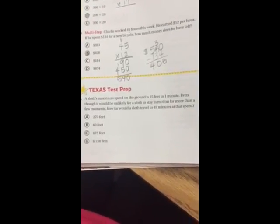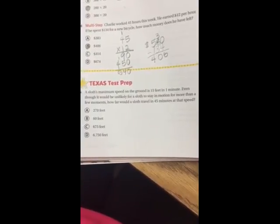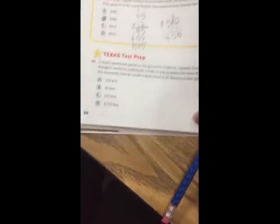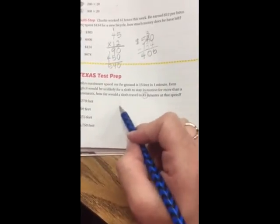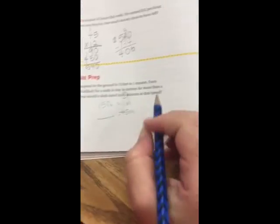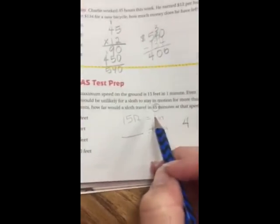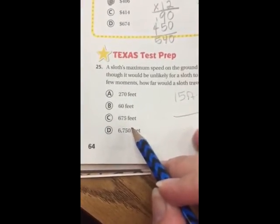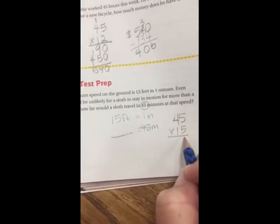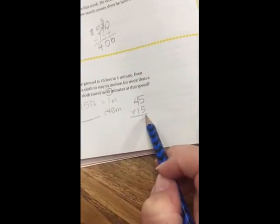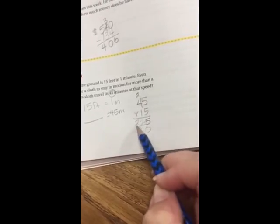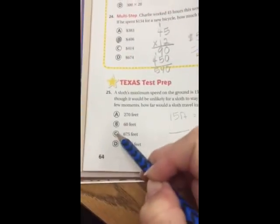Number 25. His sloths' maximum speed on the ground is 15 feet in one minute. Even though it would be unlikely for a sloth to stay in motion for more than a few moments, how far would a sloth travel in 45 minutes at that speed? The question is, how far will he travel in 45 minutes? Well, I know 15 feet is one minute. So, 45 minutes, I've got to figure out. So, I'm going to multiply. And I know I'm multiplying. Why? Because I'm starting off with 45 minutes and I'm going larger. All of these numbers are larger than 45. So, I'm going to do 45 times 15. 5 times 5 is 25. Carry my 2. That's 20. Plus 2 more is 22. 5, 4. 5, 7, 6. 6, 175.